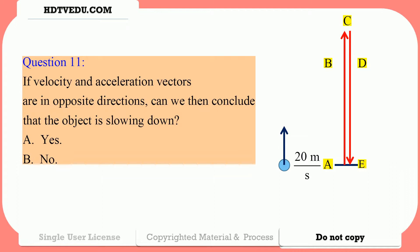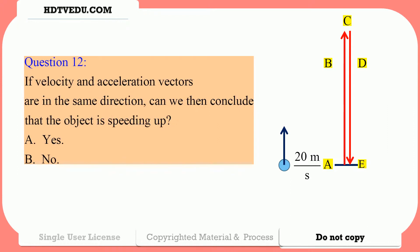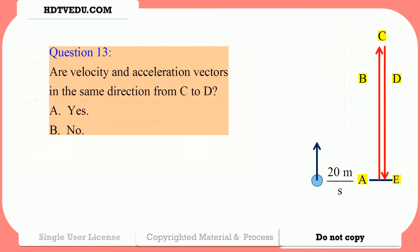Question number 11: If velocity and acceleration vectors are in opposite directions, can we conclude that the object is slowing down? A: yes, B: no. Question number 12: If velocity and acceleration vectors are in the same direction, can we conclude that the object is speeding up? A: yes, B: no. Question number 13: Are velocity and acceleration vectors in the same direction from C to D? A: yes, B: no.